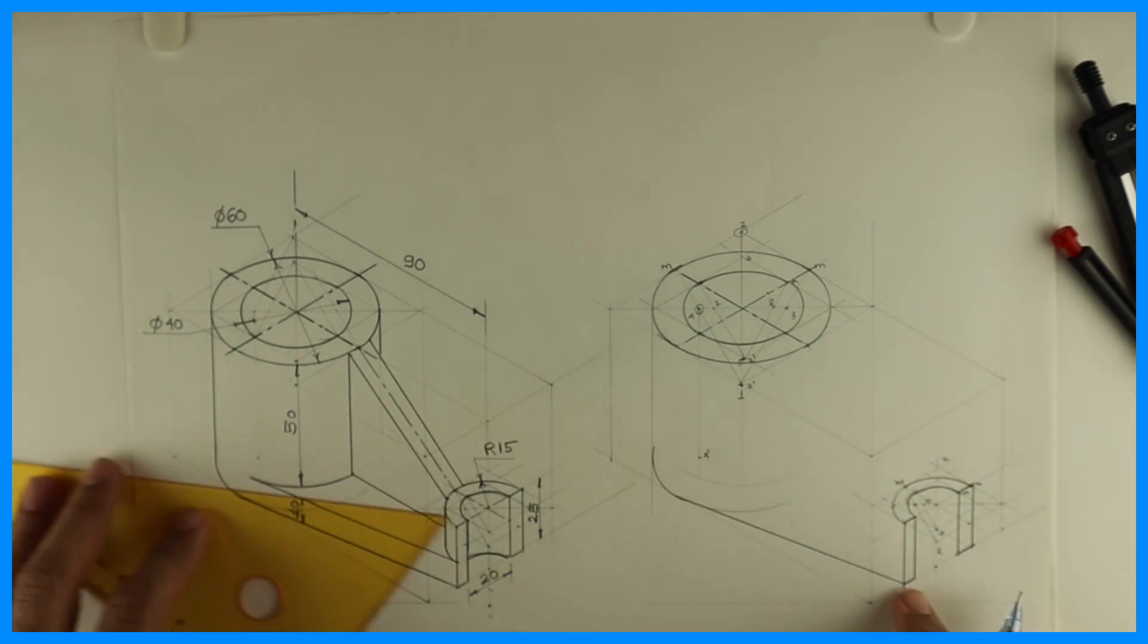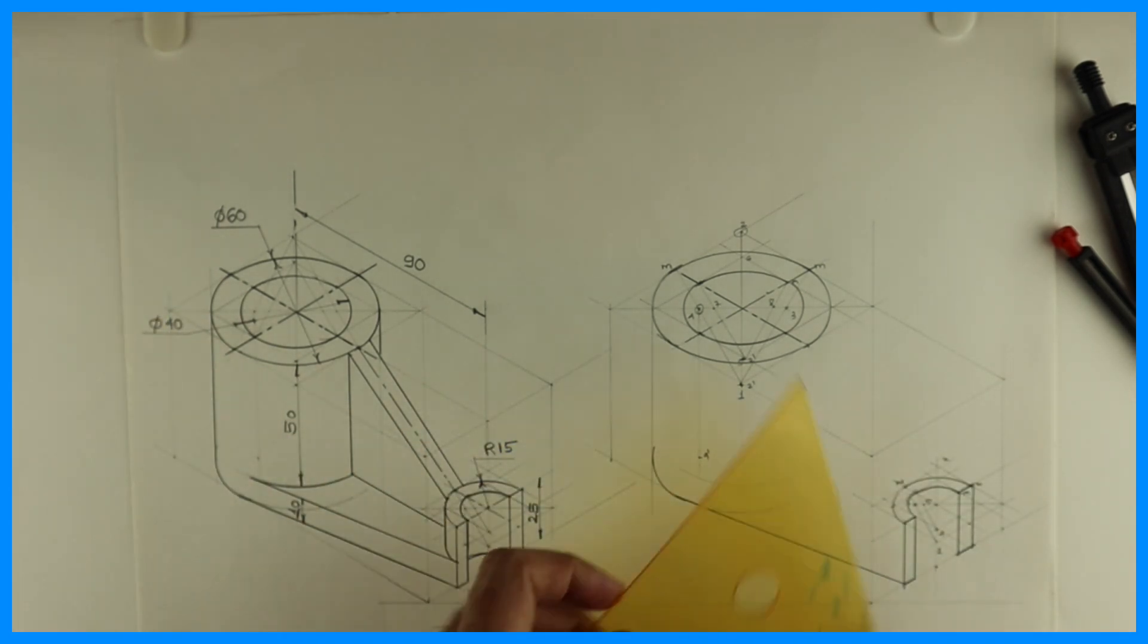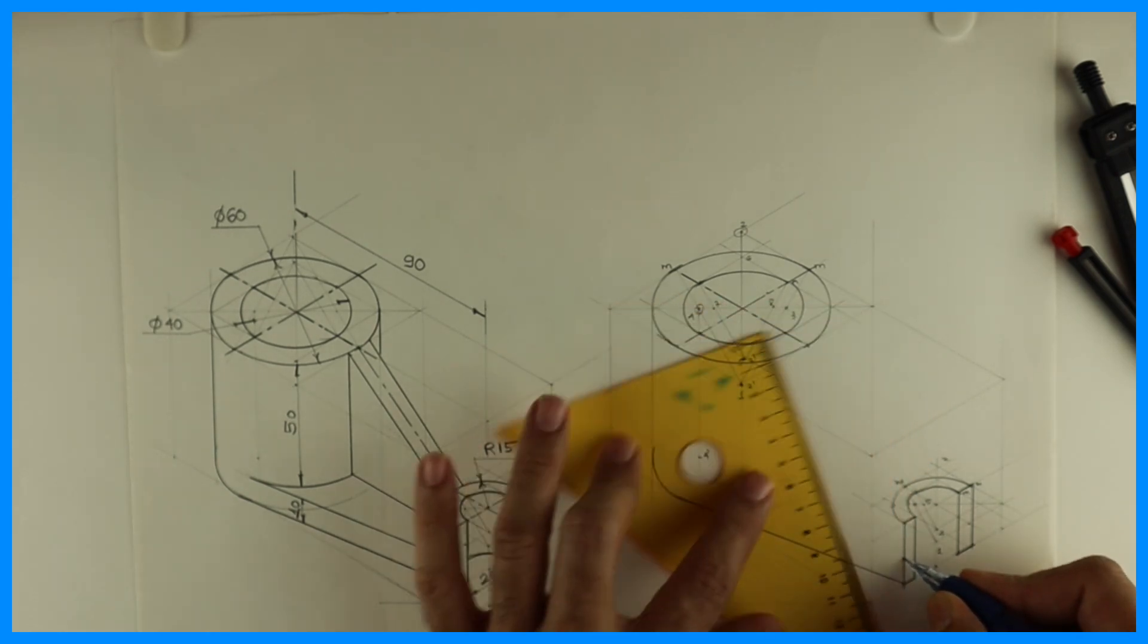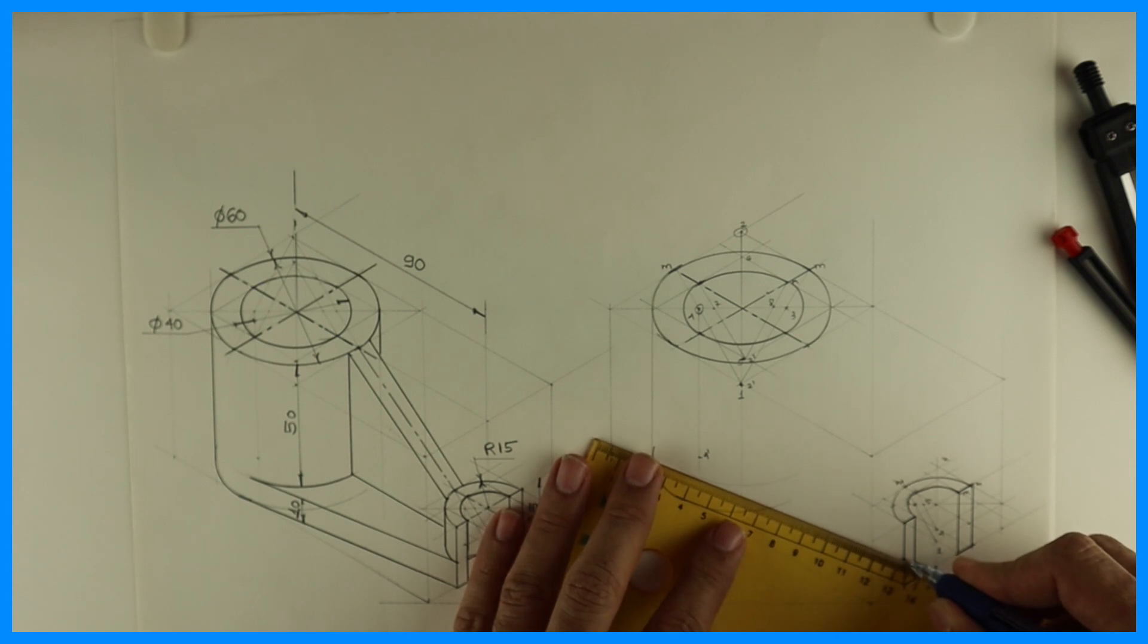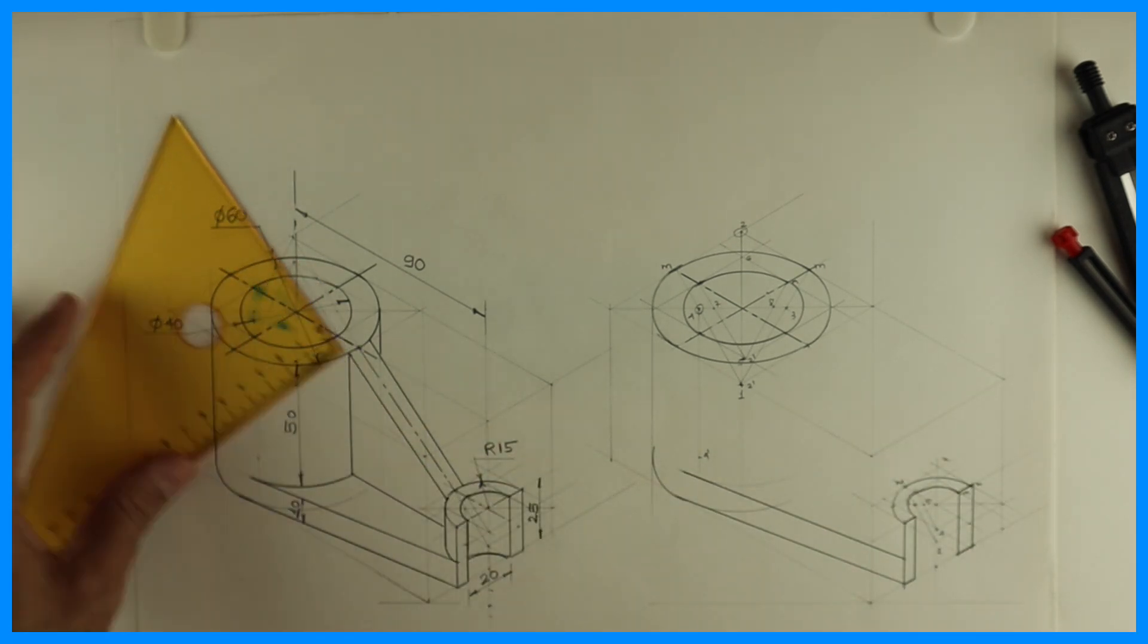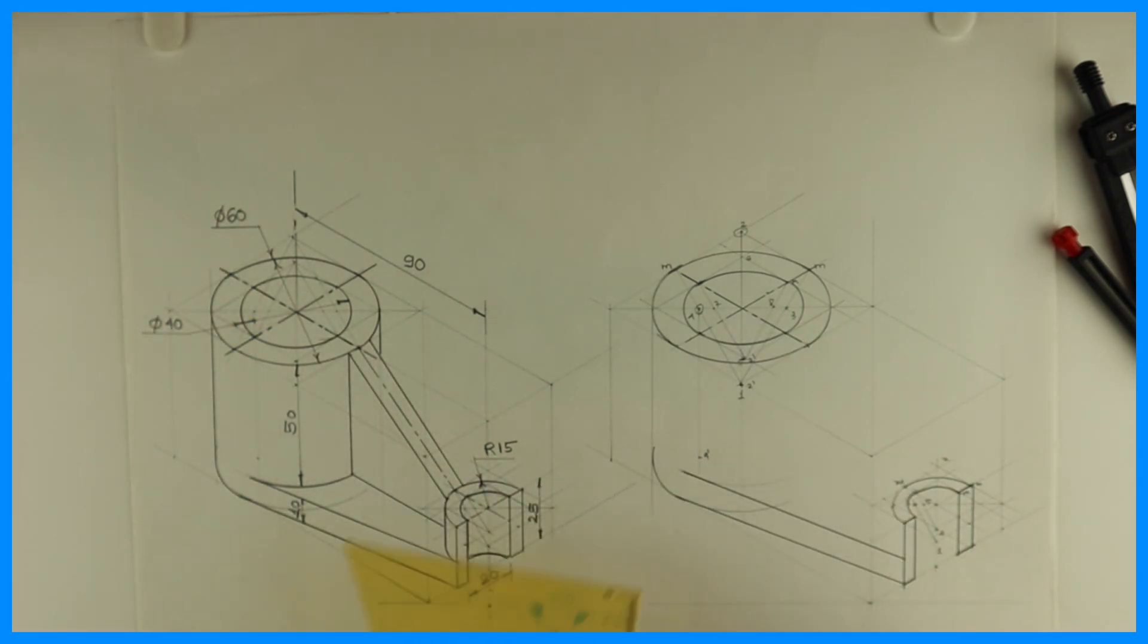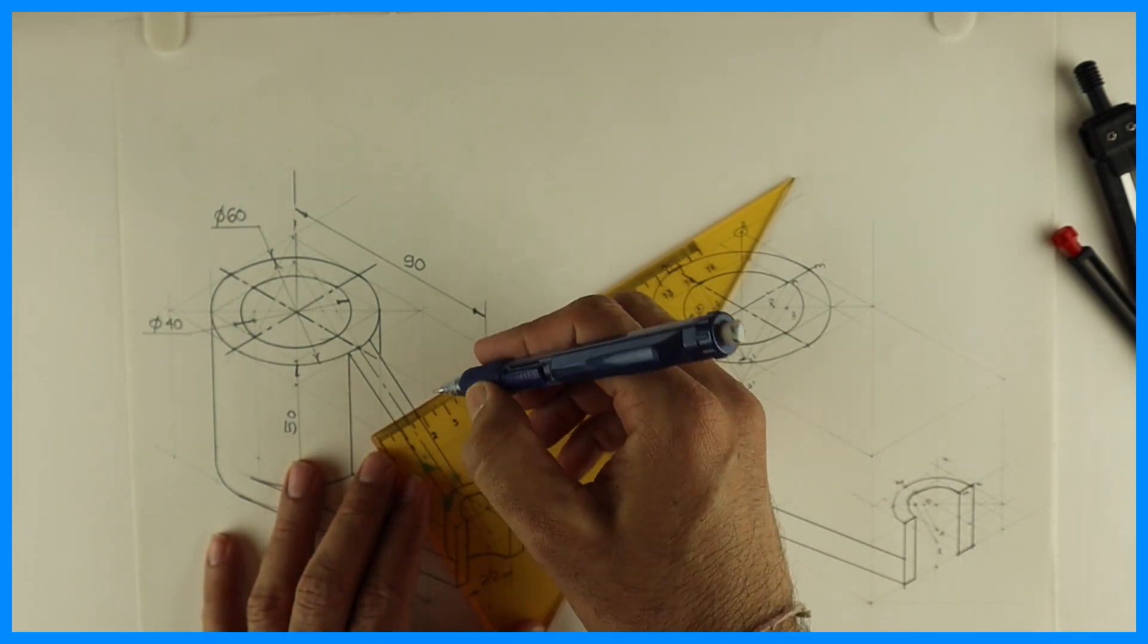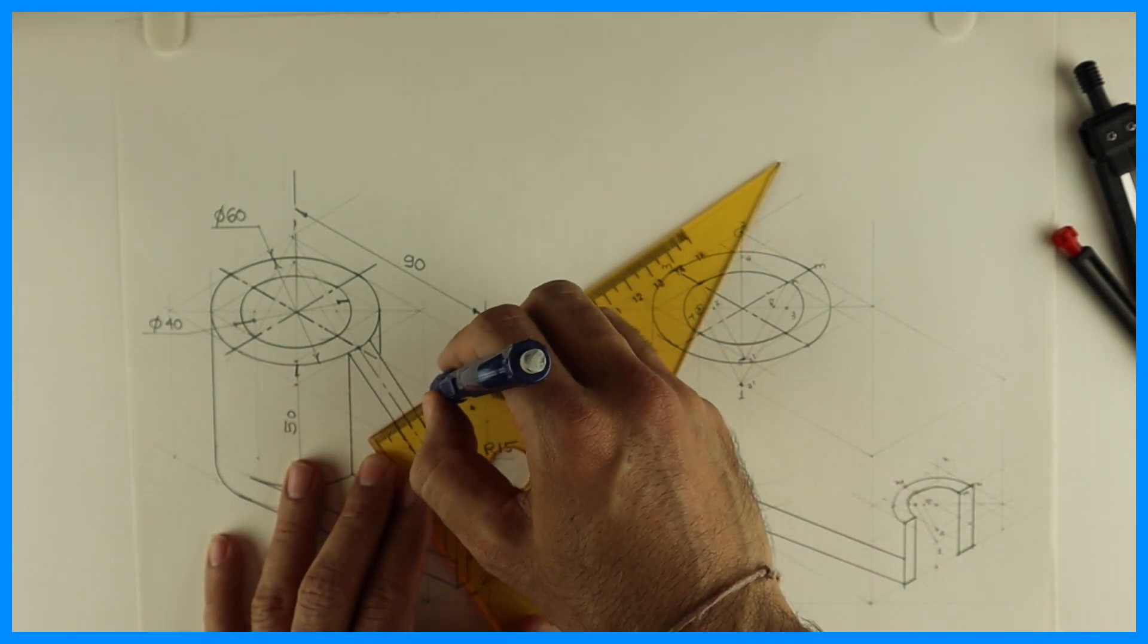Then you join this tangent. Then you join this tangent. This height is 10, so I can take 10 from here and draw another tangent. Then this tangent, this is 10mm in width.